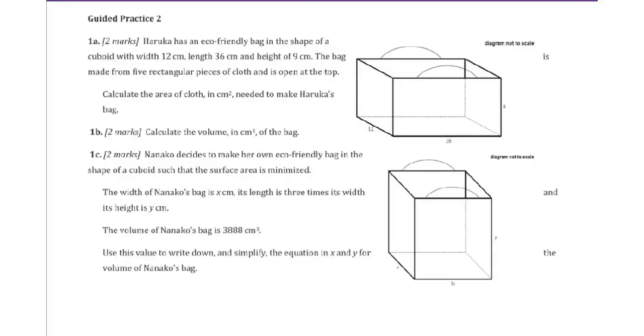Now let's go to Guided Practice 2. Haruka has an eco-friendly bag in the shape of a cuboid with a width of 12 centimeters, length 36 centimeters, and height of 9 centimeters. The bag made from five rectangular pieces of cloth and it's open at the top.